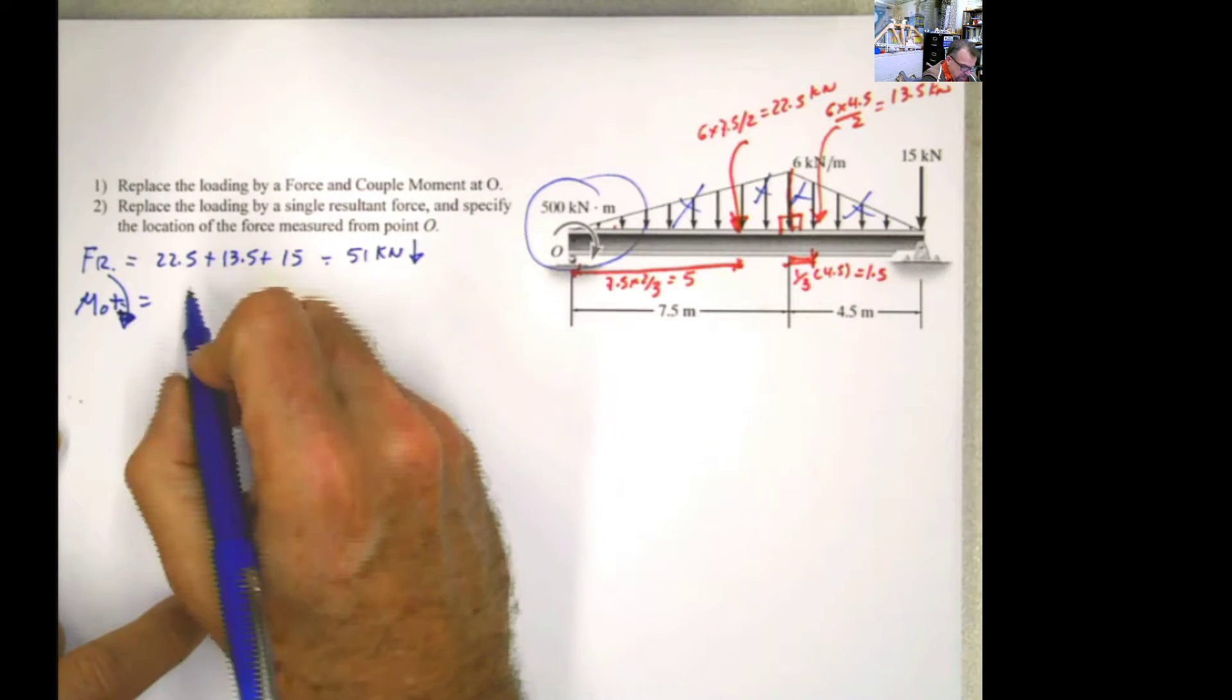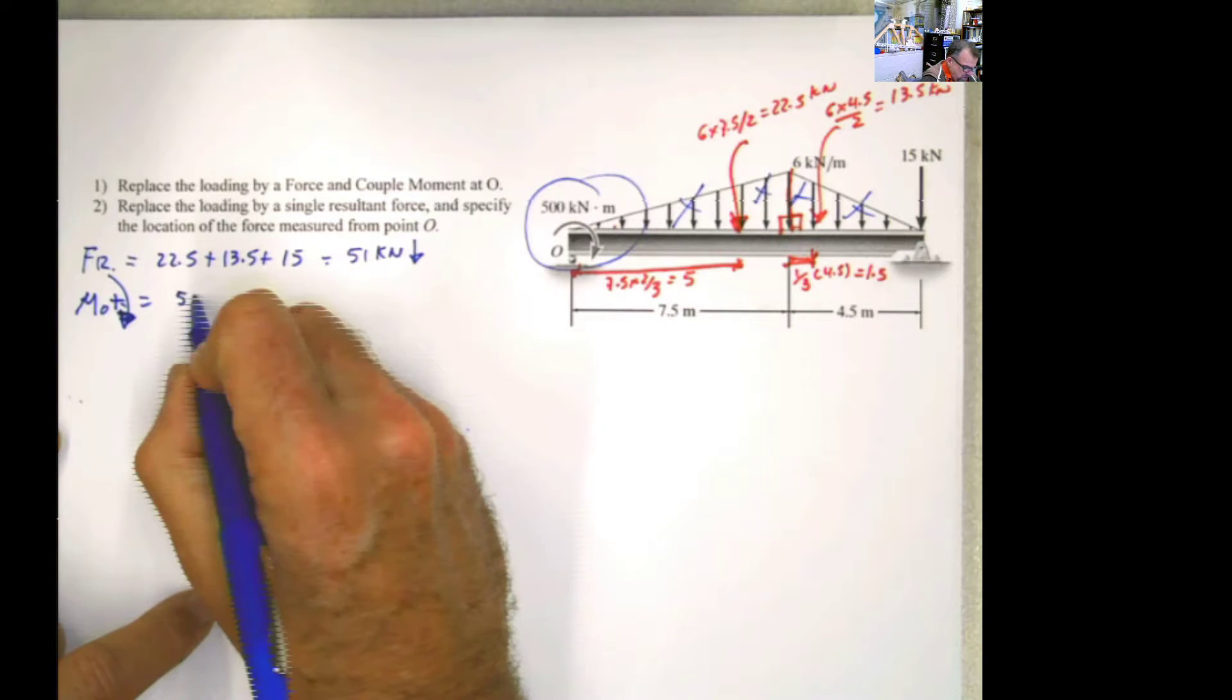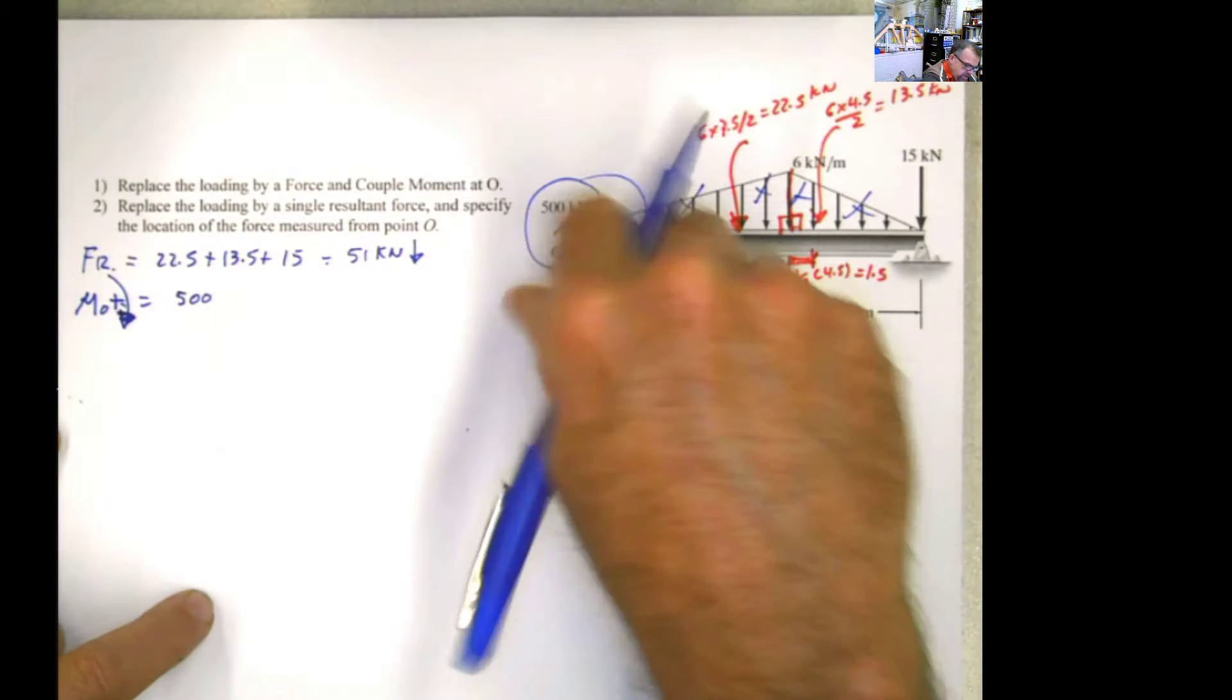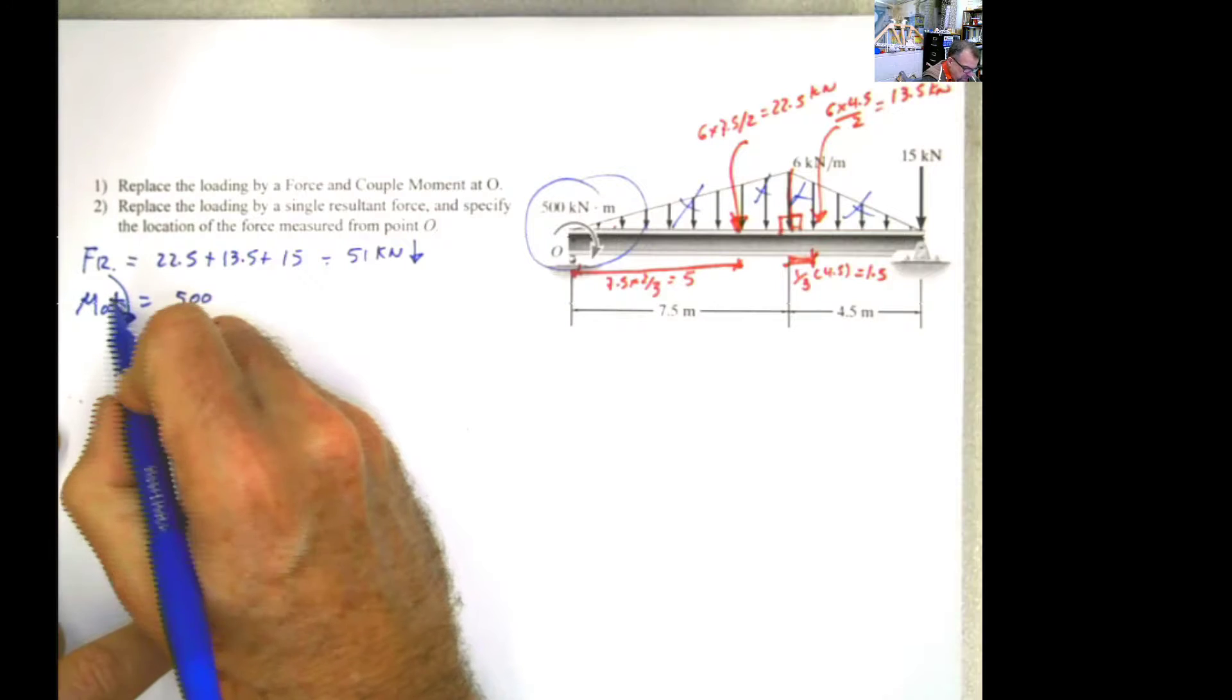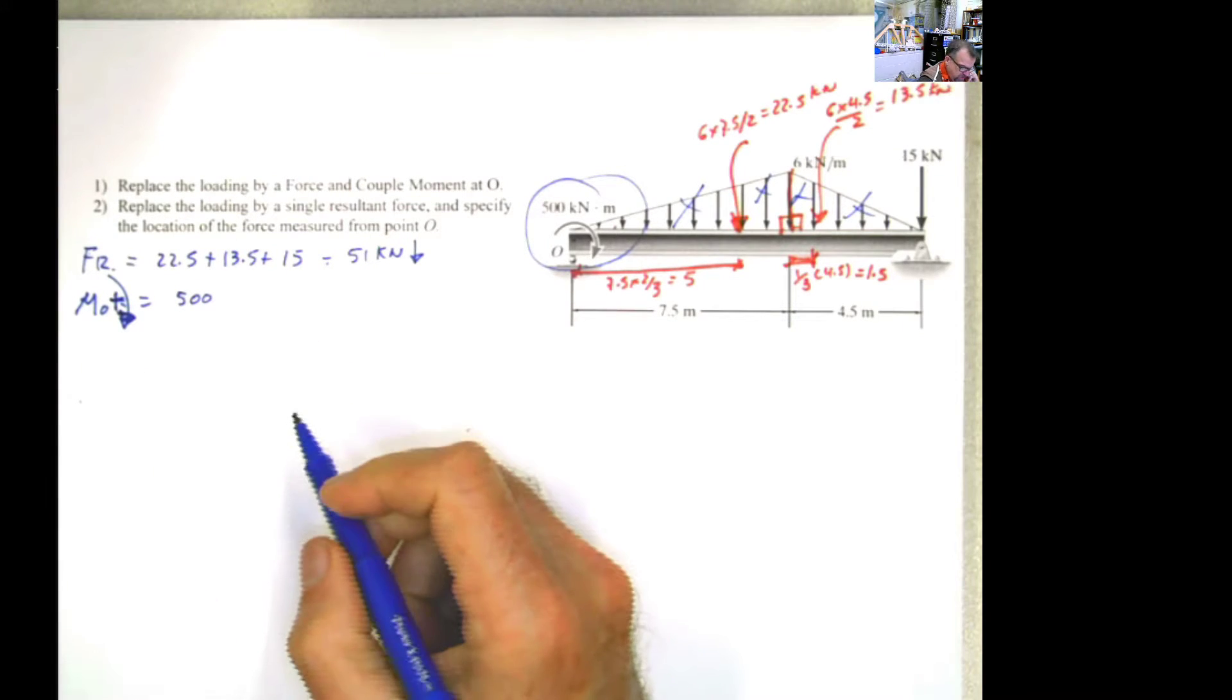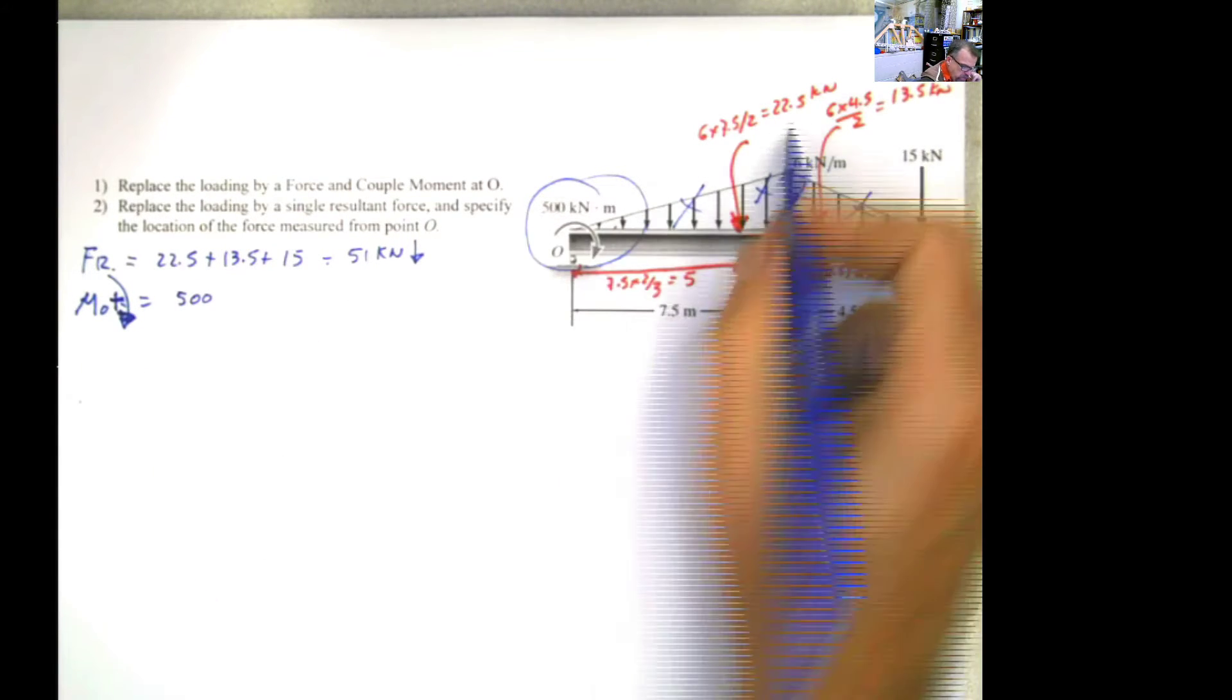Don't forget that moment because this is extremely, extremely, extremely the number one cause of error. That is a moment acting clockwise, and I assume that clockwise was positive for this case.